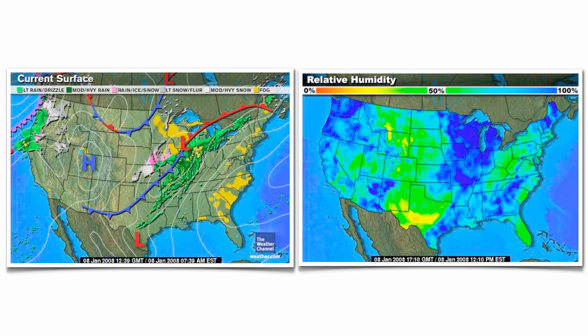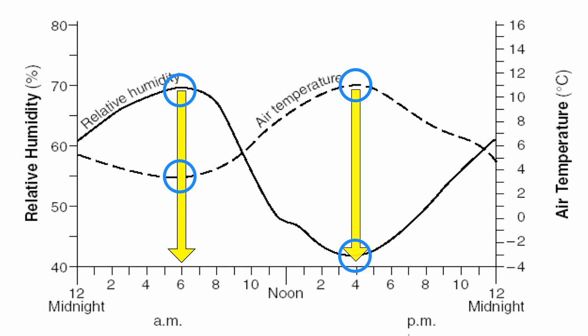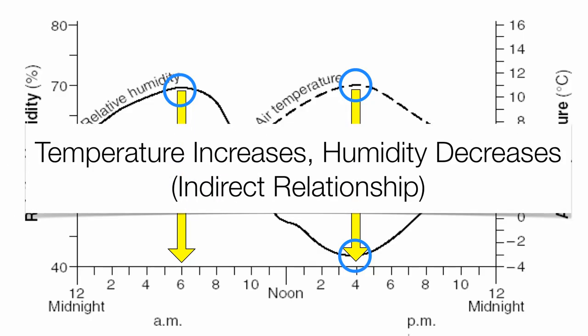Looking at the two maps, you can see the big low-pressure center with all the precipitation in the center of the country. The relative humidity key shows it's close to 100% — anytime you get 100% humidity outside, you're probably going to have a pretty saturated air mass and some rain. On the chart, relative humidity is the solid line and air temperature is the dotted line. When humidity goes up, temperature goes down — that occurs around 6 in the morning. When temperature goes up, humidity goes down — that occurs around 4 in the afternoon. So the relationship between relative humidity and air temperature is indirect.